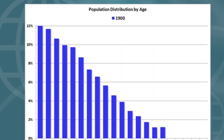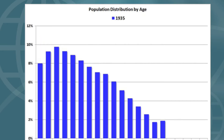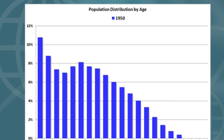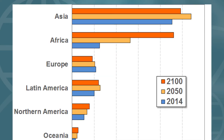This prevailing variation in population distribution can also be understood through density of population. Population density is measured as the number of persons living per square kilometer of an area — the total population of a region divided by its total area. Among the continents, Asia has the highest population density at about 93 persons per square kilometer, and Oceania the lowest at around 4 persons per square kilometer.